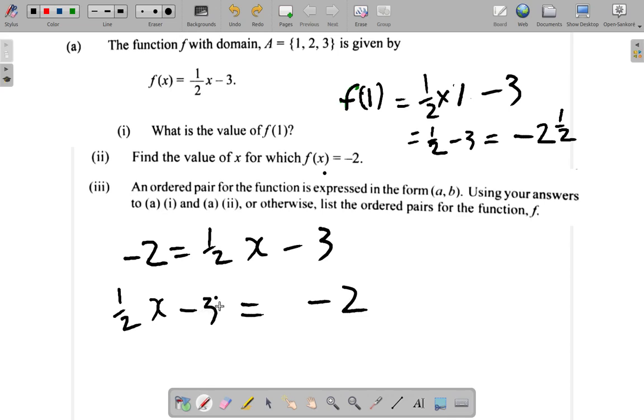How to get rid of negative 3? You plus 3, plus 3. Negative 3 plus 3, that's 0. So you don't have to worry about the 3 anymore. You have half x equal. Negative 2 plus 3 is what? 1. Half x is equal to 1. Now you have to get rid of the half.